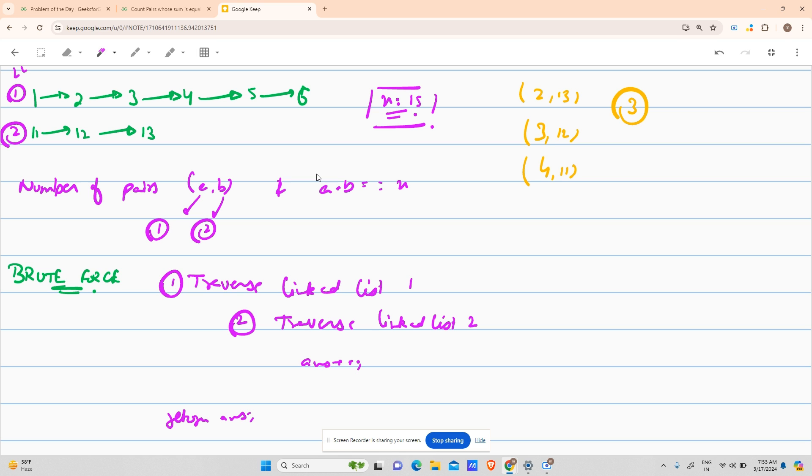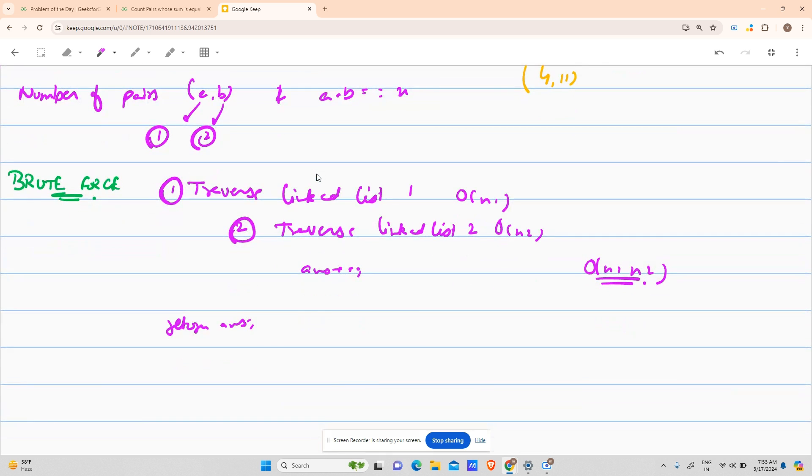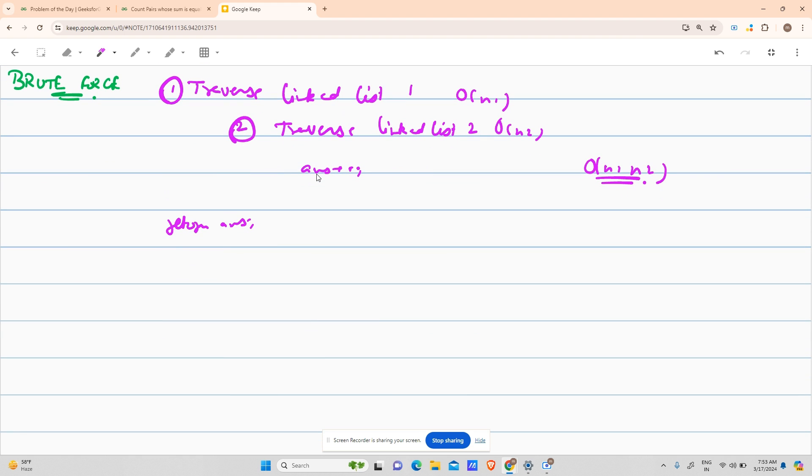What is the time complexity? As you can see, I'm traversing, the first loop is running O of n1 times and n1 is the length of this loop. n2 is the length of this loop. O of n1 for this, O of n2 for this, so it is inside, so it will be O of n1 times n2. That is n squared if n1 and n2 equals n. What is the space complexity here? It is O of 1 because we are not using extra space.